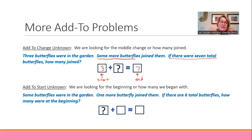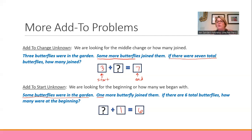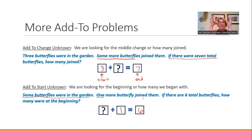'Add to start unknown' says it all — we don't know what we're starting with, but we do know how many joined and how many total we have. For example: some butterflies were in the garden, one more butterfly joined them — if there are six total butterflies, how many were at the beginning? As an instructor creating worksheets, you'll use a generic number at the beginning, add a specific number, and tell them how many total. Maybe: some kids were playing in a park, five more joined them — if there are ten total kids, how many were there at the start?